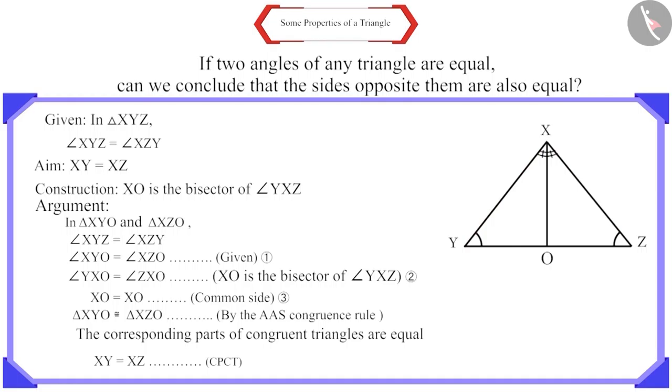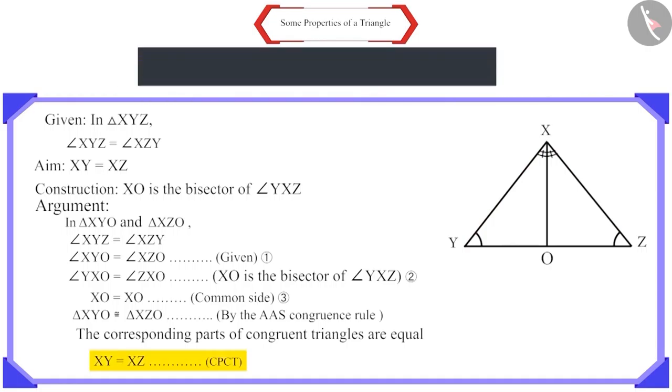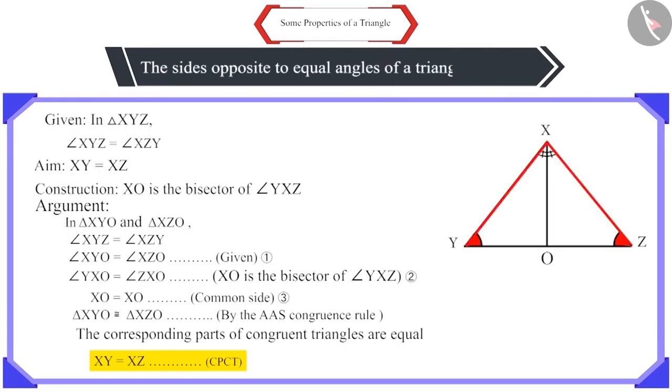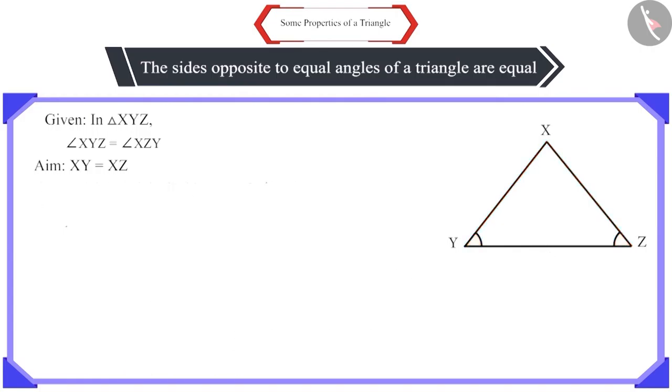Therefore, we can say that the converse of the theorem is also true. That is, the sides opposite to the equal angles of a triangle are equal. You can also try to prove it by any other method.